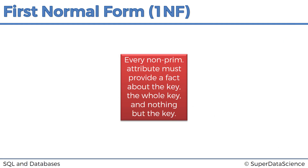Here's the mnemonic — let's quickly read through it. It says that every non-prime attribute must provide a fact about the key, the whole key, and nothing but the key. To remember this, think of how in American courts they put their hand up and pledge to say the truth, the whole truth, and nothing but the truth. That's exactly where this mnemonic came from — it's basically copied from there just so that it's easier to remember.